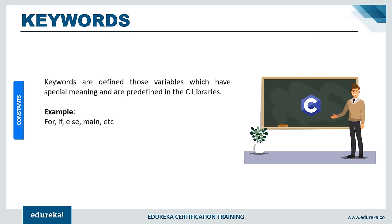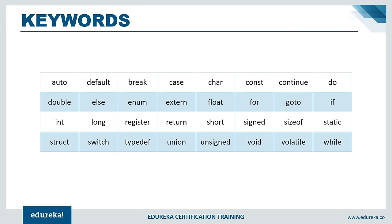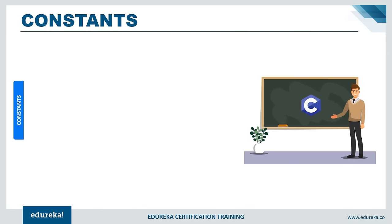Keywords are predefined in C libraries — you cannot rename or reprogram them. For example, loops like do-while, while, and for have predefined methods and functionality. You cannot access, redefine, or reprogram them. Some basic examples of keywords are: for, if, else, main, void, etc. Here is a complete description of all the keywords used in C programming language.